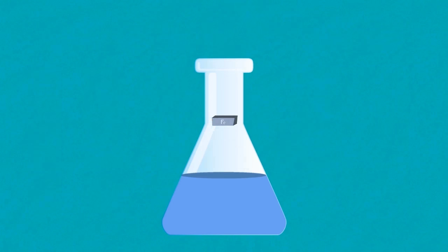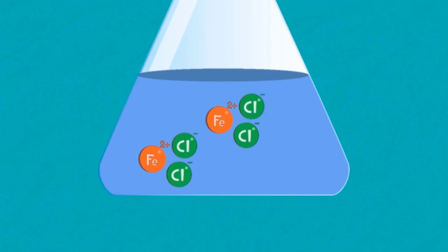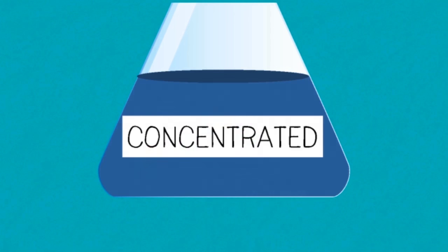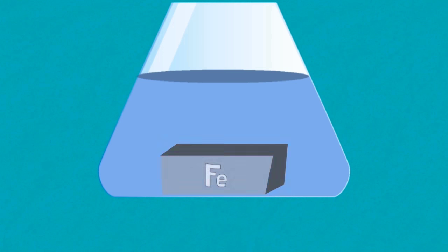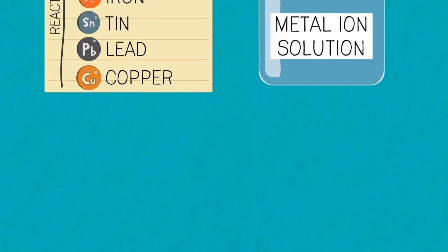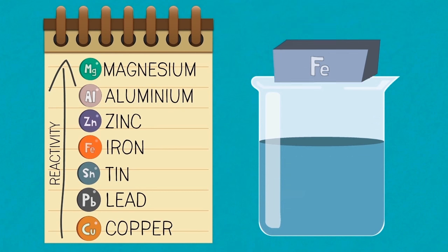Iron reacts with halogens to produce mainly iron three halides. Iron reacts with acids to produce a dissolved metal salt and hydrogen. If the acid is concentrated like nitric acid this passivates the surface so it doesn't react further. And finally iron will displace a metal from its ions provided they are under iron in the reactivity series.